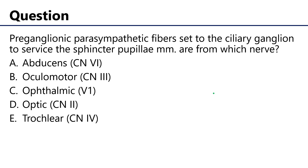And that leads us to the assessment question of the video: Preganglionic parasympathetic fibers sent to the ciliary ganglion to service the sphincter pupillary muscles are from which nerve? Is it A, abducens? No — abducens abducts, serving the lateral rectus. B, oculomotor? Yes, because oculomotor has a parasympathetic component to it. Ophthalmic? No — it may have some sympathetic postganglionic fibers hitchhiking with the nasociliary, but there's no parasympathetic component. There's no parasympathetic component to optic, nor is there to trochlear. So the oculomotor nerve, cranial nerve 3, is responsible for the preganglionic parasympathetic fibers that synapse in the ciliary ganglion, and then the postganglionic fibers are conducted through the short ciliary nerves out to the sphincter pupillary and the ciliary muscles of the eye.